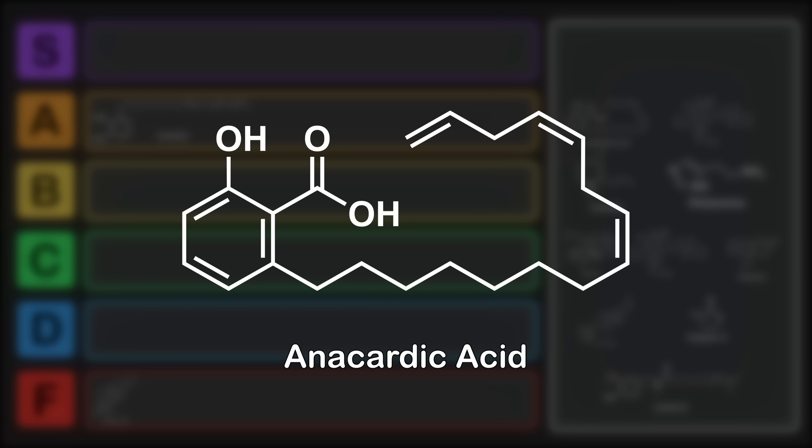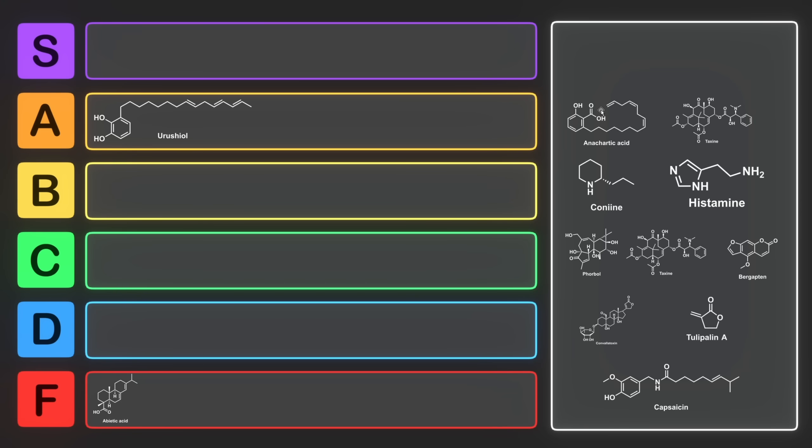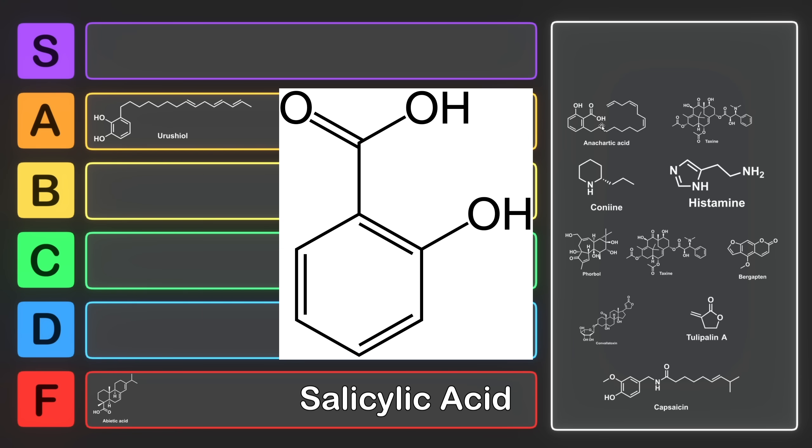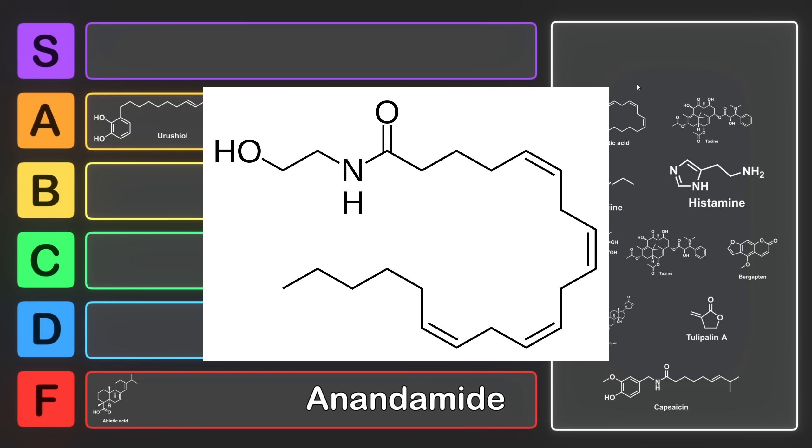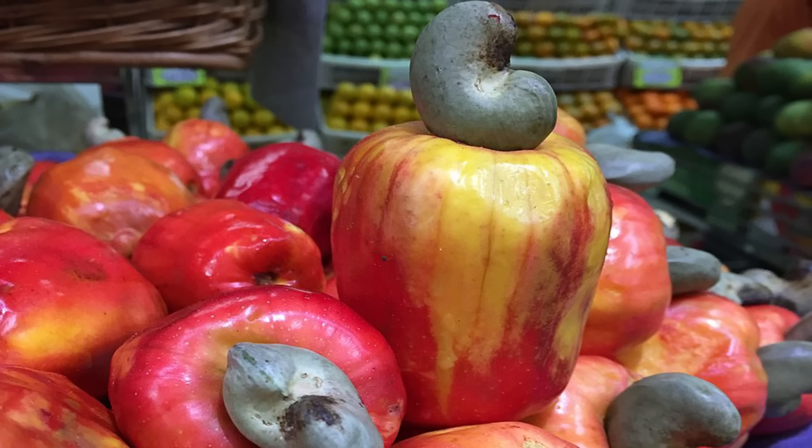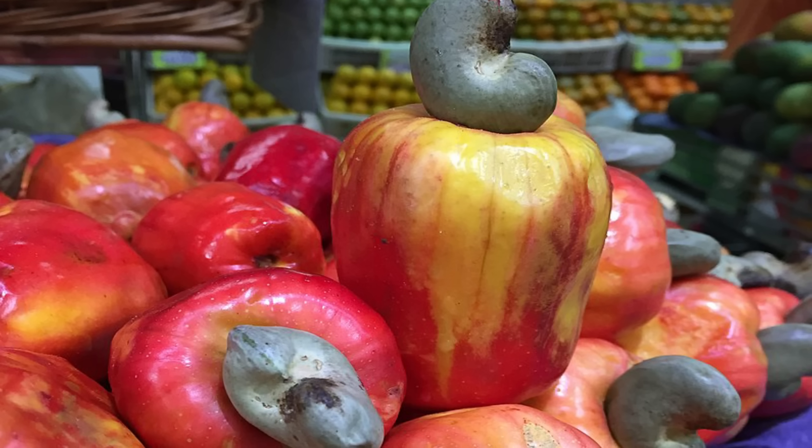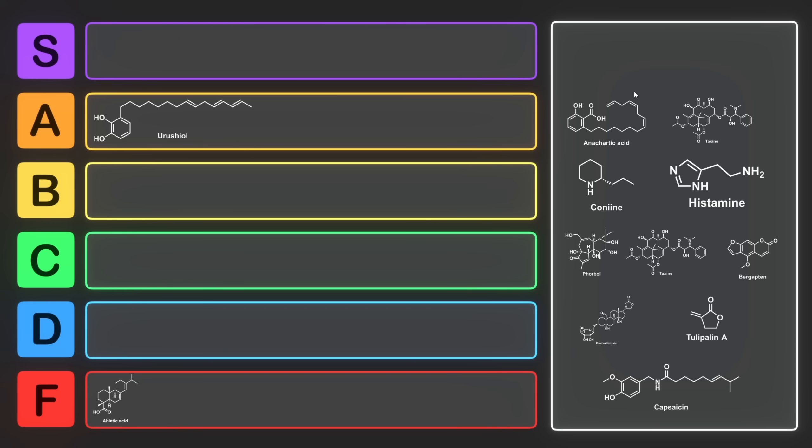This is anacardic acid. This is an orthohydroxybenzoic acid, also known as a salicylic acid, although it also has this long alkyl chain with some alkenes that kind of remind me of a molecule called anandamide. Anacardic acids are a class of compounds found in the fruiting bodies and shells of cashew nuts. Anacardic acids are extremely similar to the structure of urushiol, simply having a carboxylic acid rather than a hydroxyl group. If we compare this to urushiol, you can see how similar they look. This is more or less the same thing.